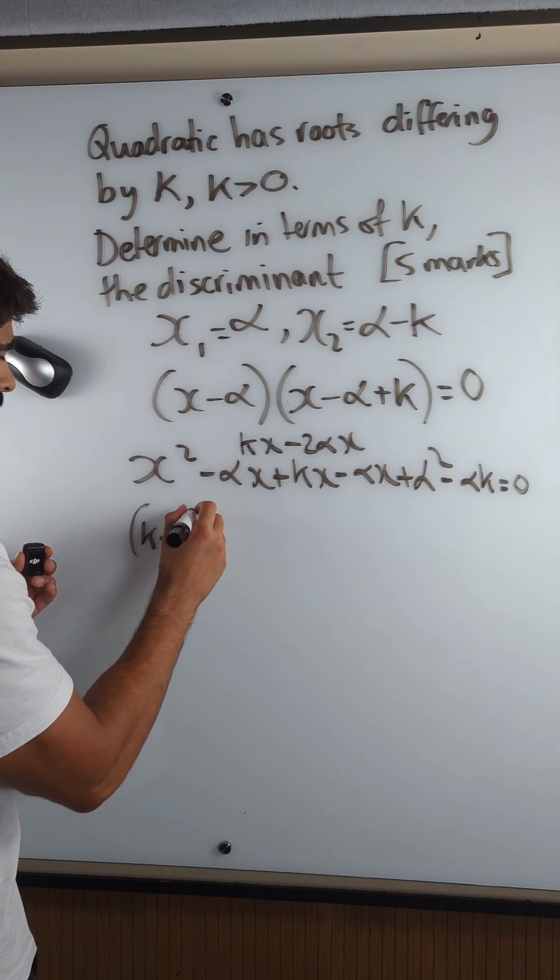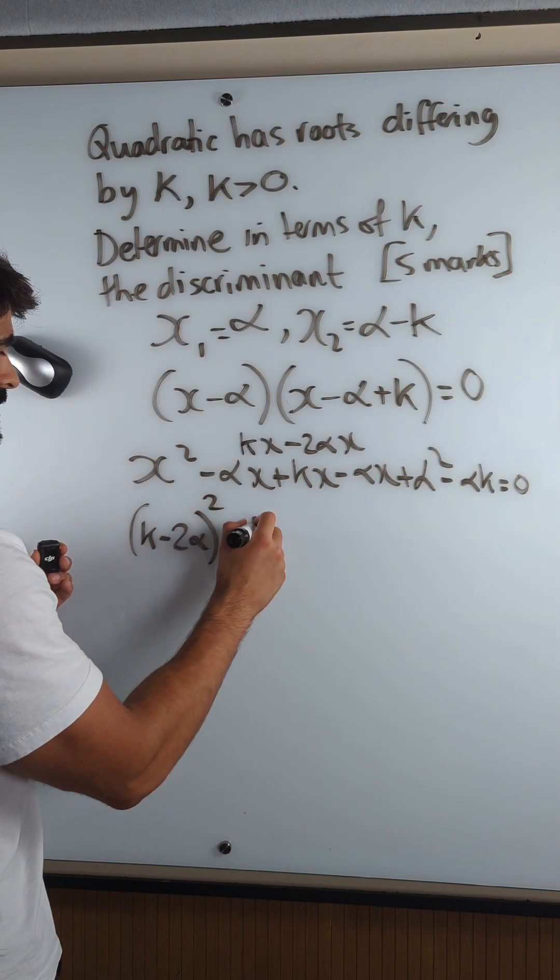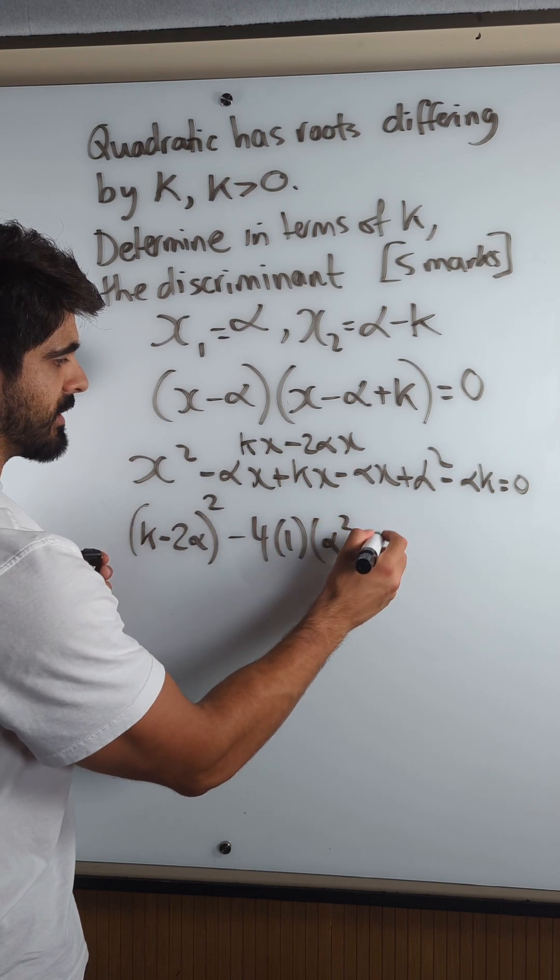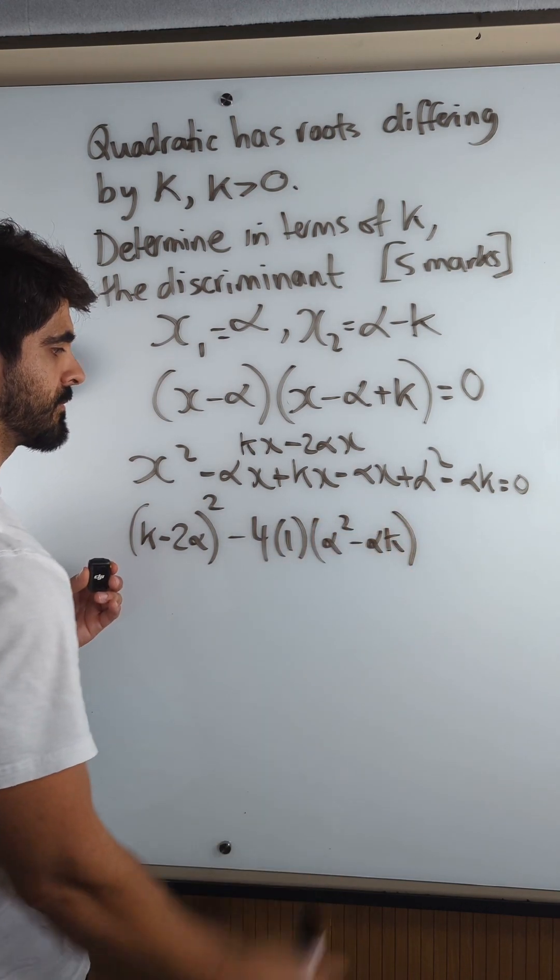k minus 2 alpha squared minus 4, a is 1, and my c term is alpha squared minus alpha k.